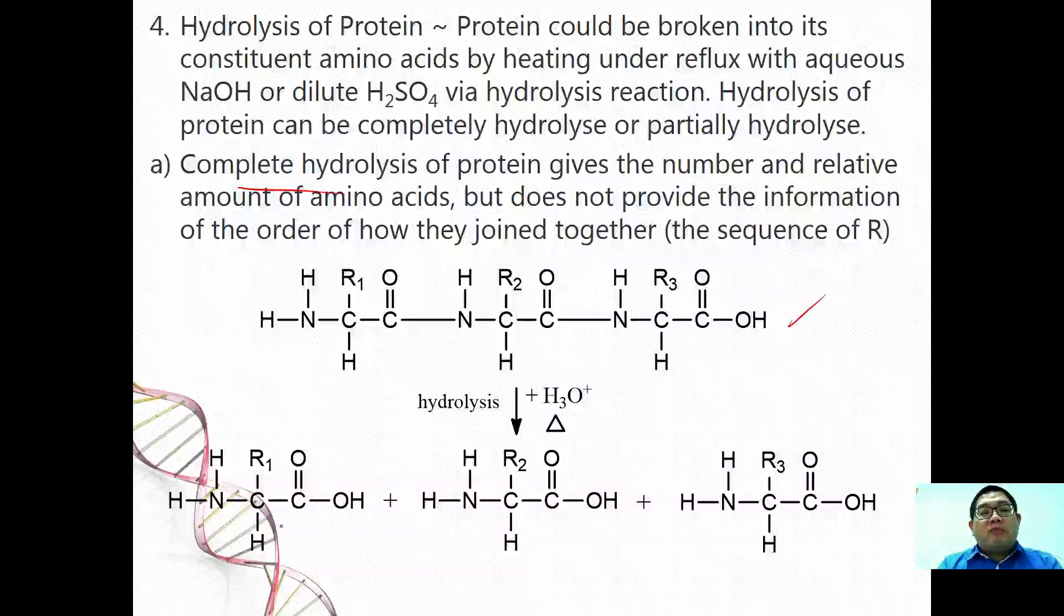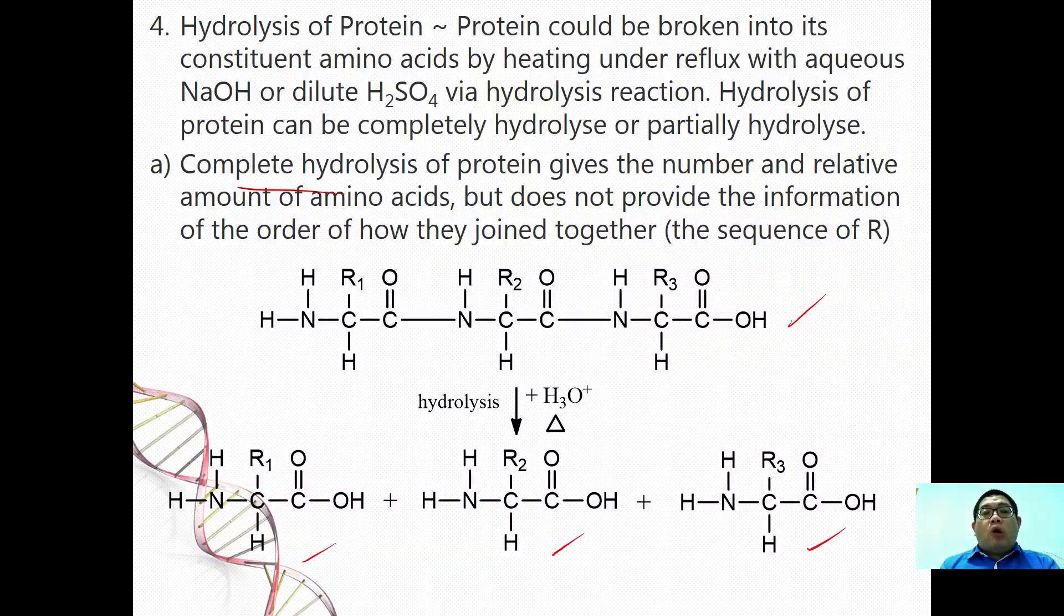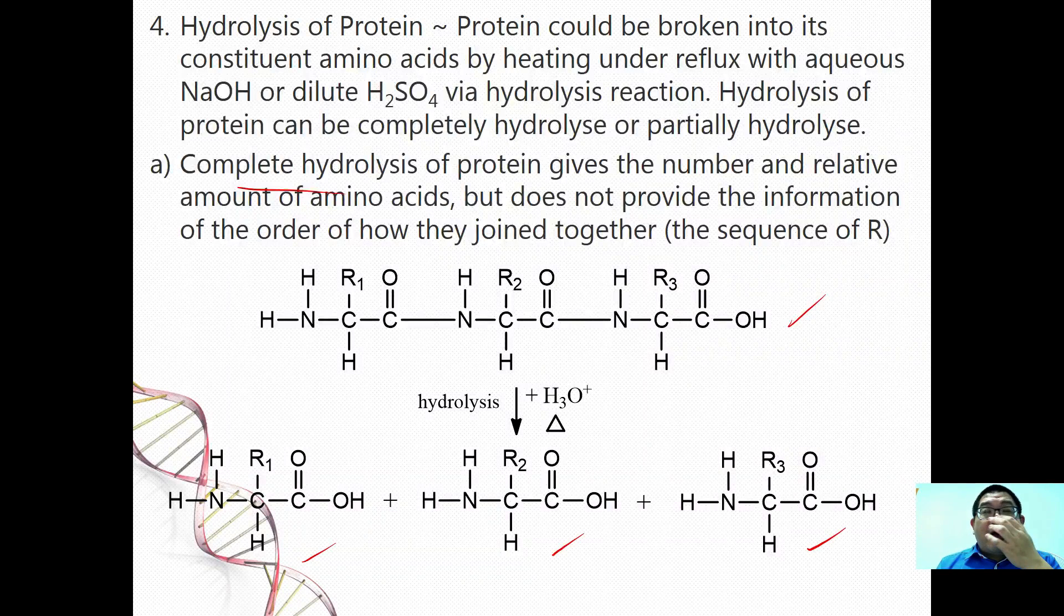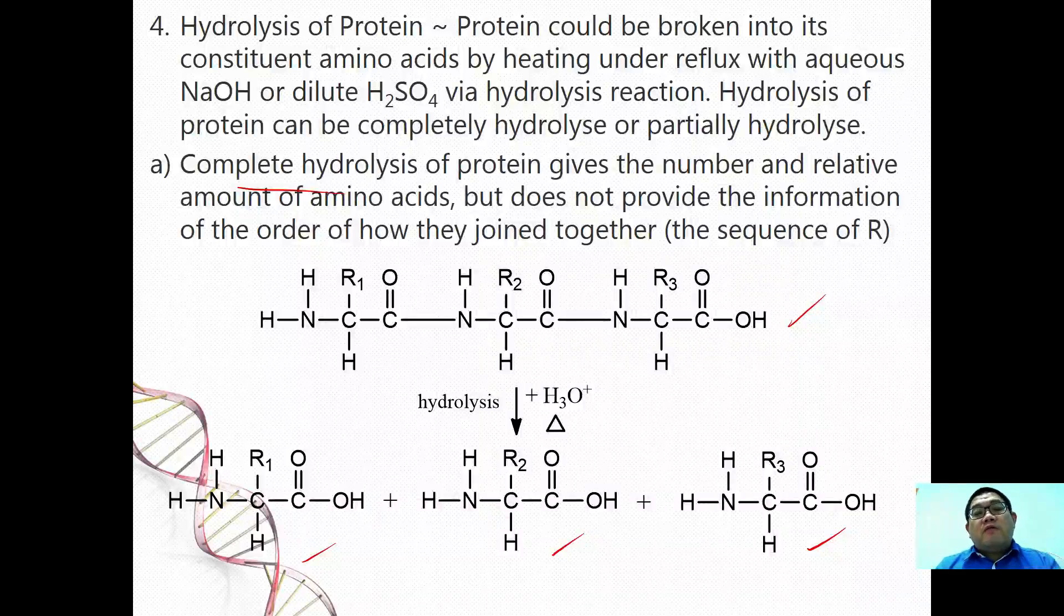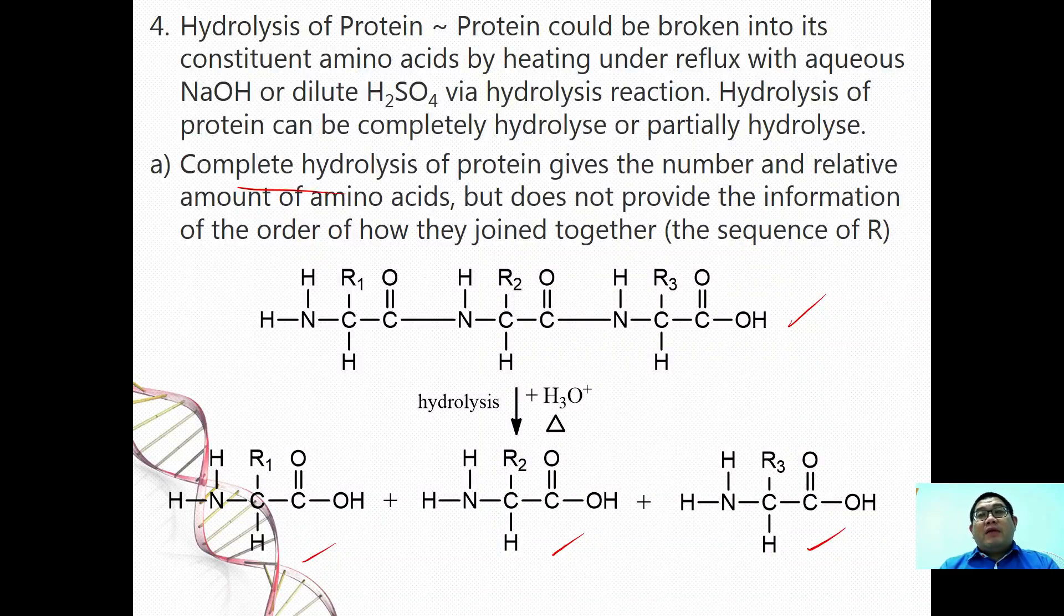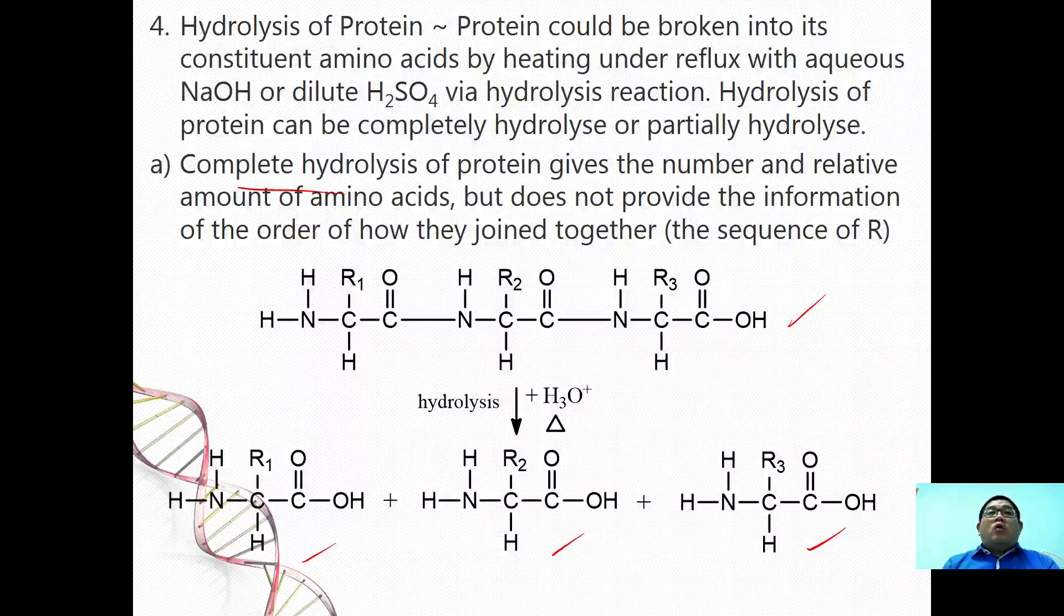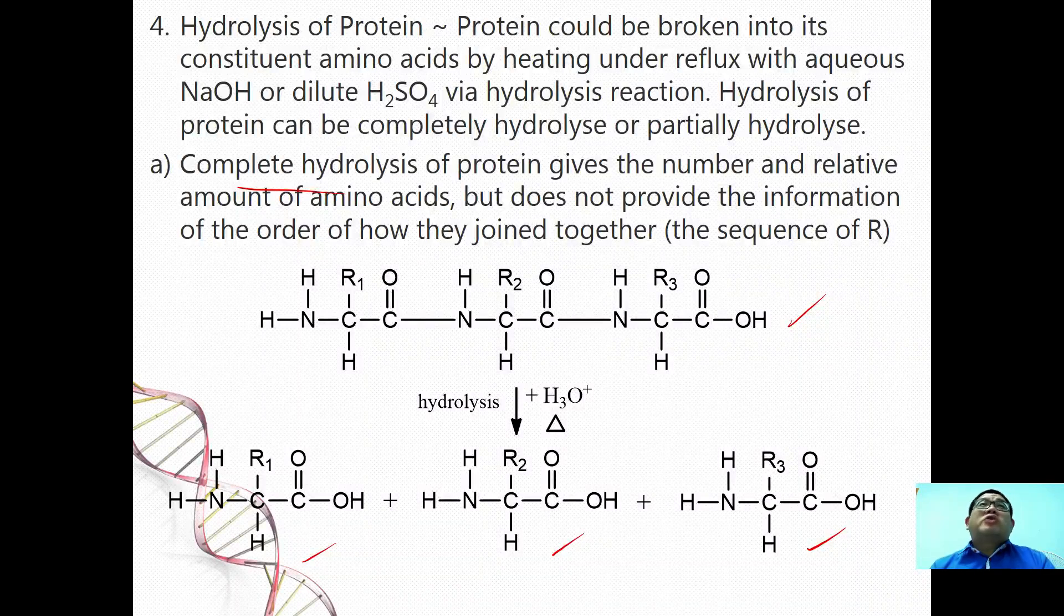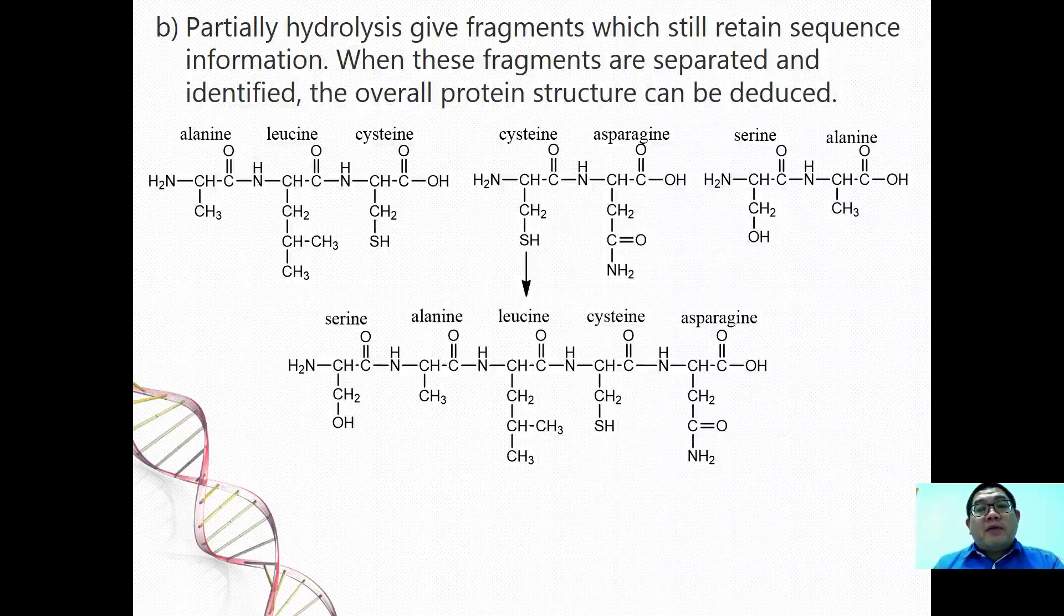Complete hydrolysis is where the long chain of the polypeptide will break into the individual amino acid involved. All of the molecules inside the peptide bond are broken completely to form the respective amino acid. However, the disadvantage for complete hydrolysis is we are not able to figure out what is the original structure looks like for the protein.